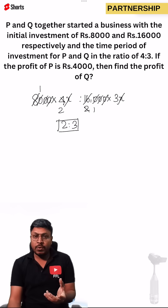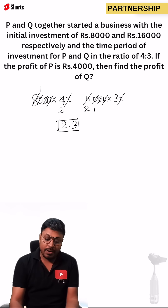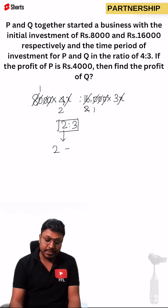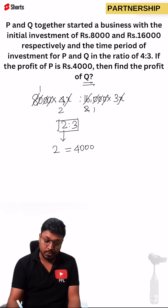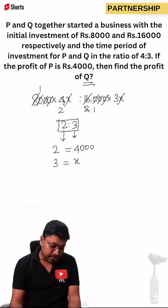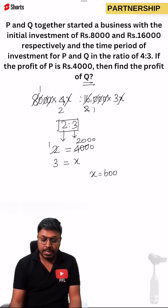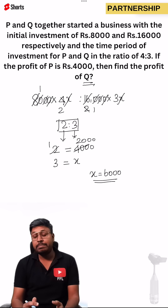Person P is getting a profit of 4,000, and we know P's investment share is 2 parts. So 2 parts corresponds to 4,000. Our target is to find the profit of Q. Q's investment is 3 parts, which equals x. Cross multiplying: 1×2=2, so x equals 6,000. The total profit received by person Q is 6,000.